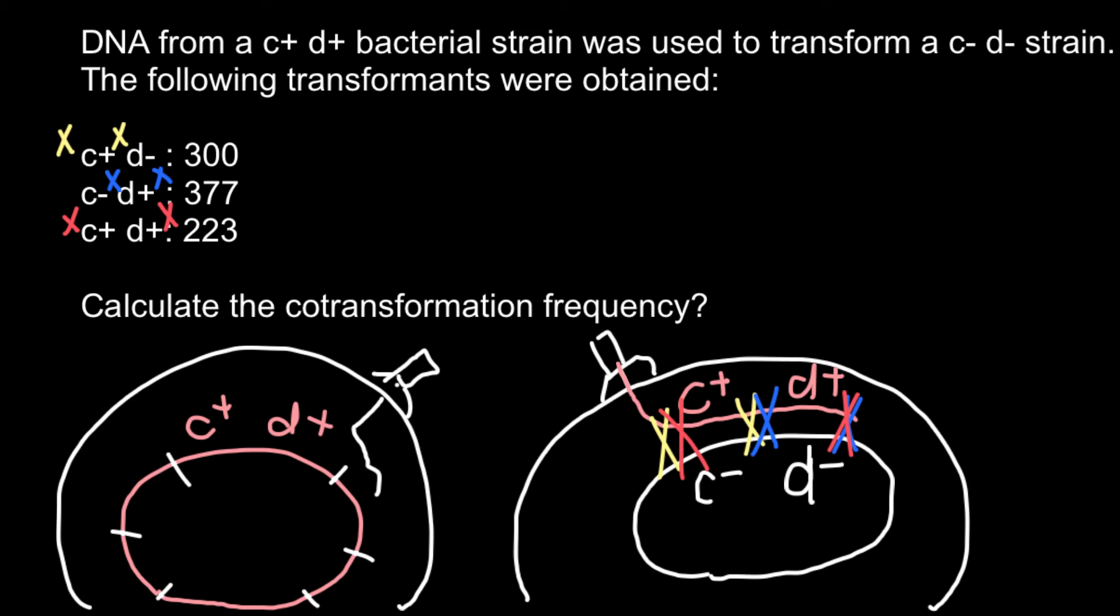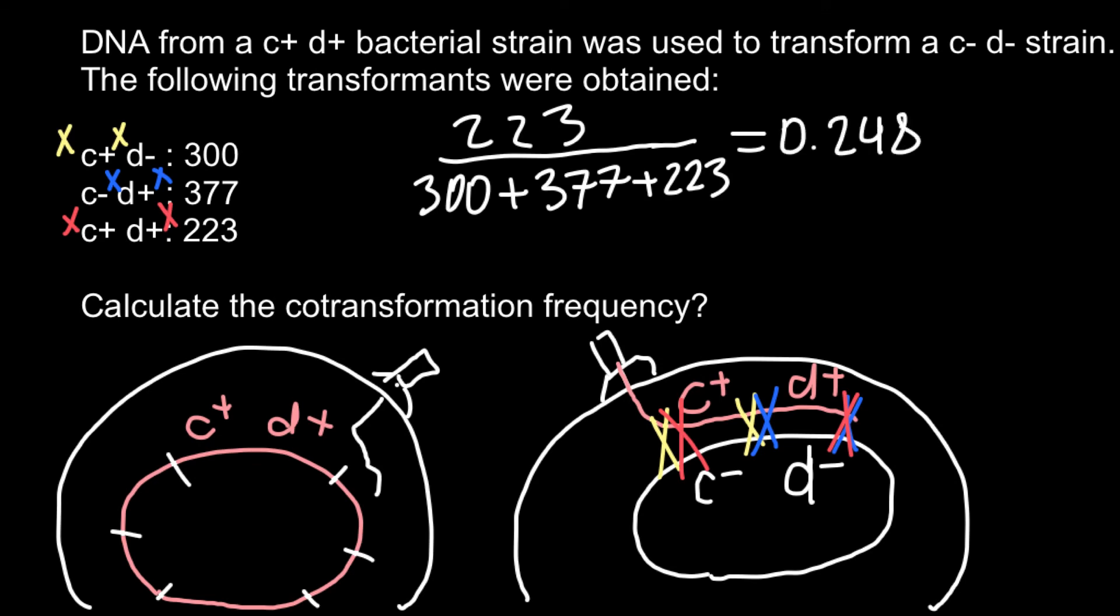We just have to divide 223 by the total number of recombinants: 300 plus 377 plus 223. And the answer would be 0.248. And if we need an answer in percentage form, we have to multiply by 100. And the answer would be 24.8%.